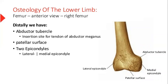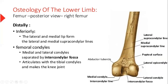Now we have the distal end of the femur. This is the distal and anterior part of the femur. We have an adductor tubercle where a muscle is attached. We have the posterior surface where the knee joint forms. In that area, we have two epicondyles: a lateral epicondyle and a medial epicondyle. Looking at the femur posteriorly at the distal side.